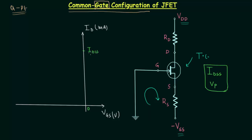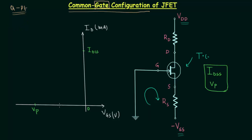When ID is equal to 0A, VGS is equal to VP. The third point we will get when we put VGS equal to VP/2 in Shockley's equation. This gives us drain current ID equal to IDSS/4. So VP/2 and IDSS/4 are the two coordinates of the third point. In this way we have three points and we join them to get the transfer curve of JFET.